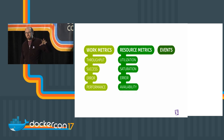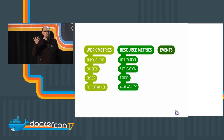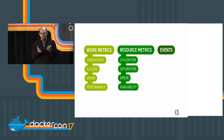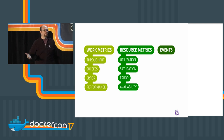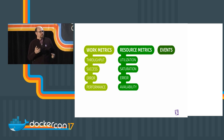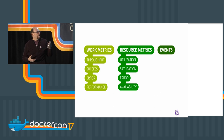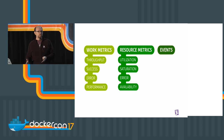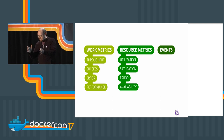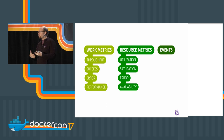Resource metrics cover utilization, saturation, error, and availability. Utilization — if you open htop, you see CPU utilization per core. On its own, that's possibly the single most worthless metric because it doesn't tell you anything — is 2% or 99% good or bad? It depends on context. But it adds context to throughput and becomes a lot more interesting. Saturation is more commonly known as a queue — how long is the line of stuff waiting to get processed? Availability might be how available your server is — 95%, 99%, whatever.